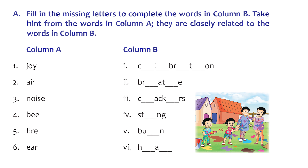Now we're going to do something different. We have Column A and Column B, with missing letters in Column B. Using the hint in Column A, let's figure out the word in Column B. The first one is 'joy' — the word starts with C. It's 'celebration' — we are filled with joy during celebration time. The next hint is 'air' — we all 'breathe' air. The third hint is 'noise' — what makes noise starting with C? It's 'crackers' — C-R-A-C-K-E-R-S.